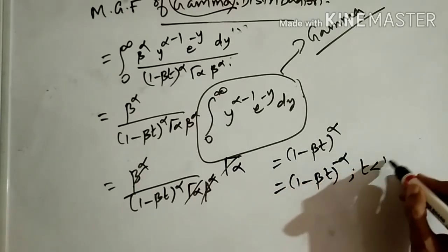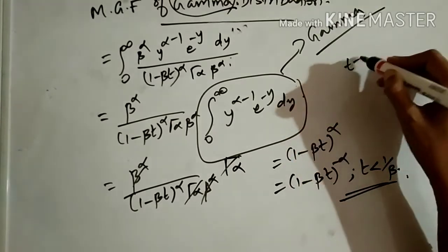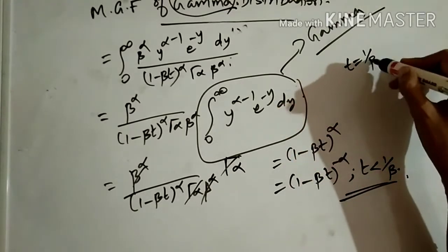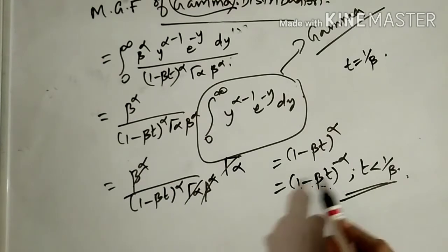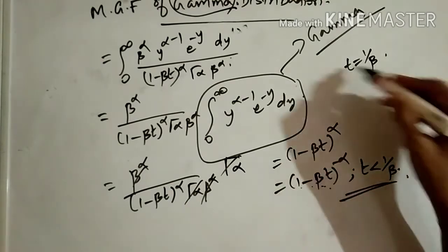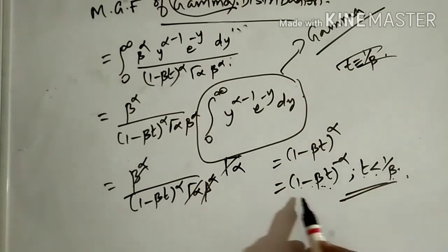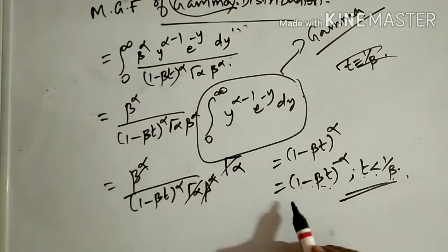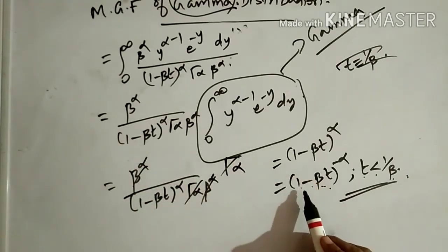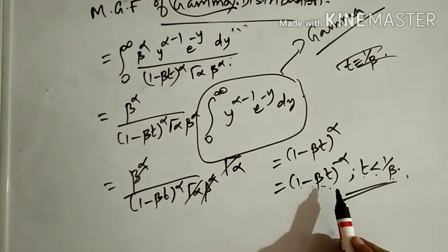The result is (1 - βt)^(-α), with the condition that t < 1/β. If t = 1/β, the expression becomes 0 since 1 - β(1/β) = 0, so the restriction t < 1/β applies. Therefore, the moment generating function of the gamma distribution is M(t) = (1 - βt)^(-α).